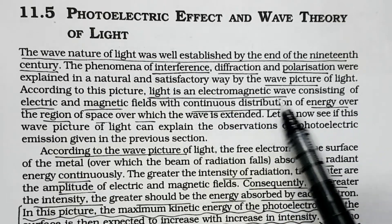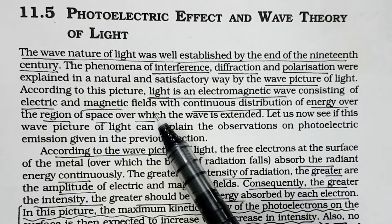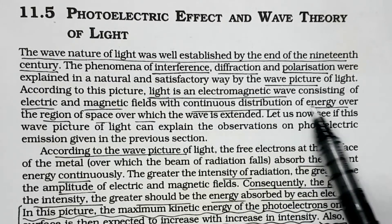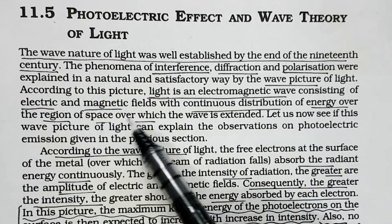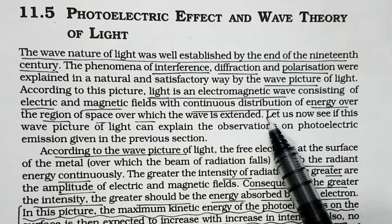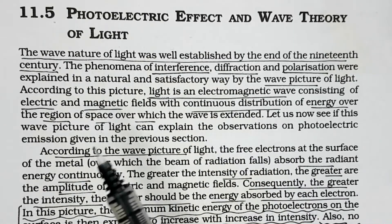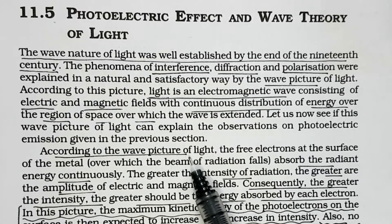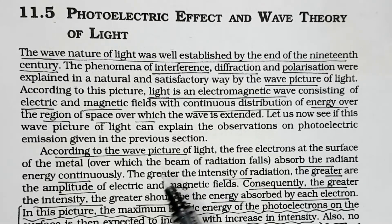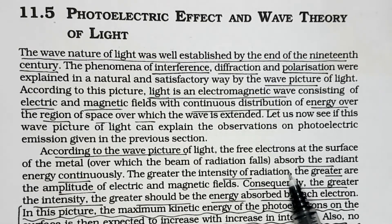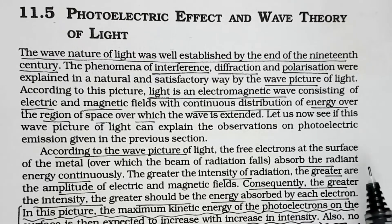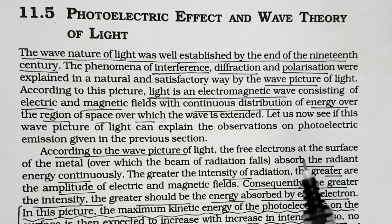Light is an electromagnetic wave in which the electric and magnetic fields oscillate. The energy is continuously distributed over the regions of space through which the wave is extended. According to the wave picture of light, the energy of the wave is dependent on intensity. Intensity is energy flowing per unit area per unit time.